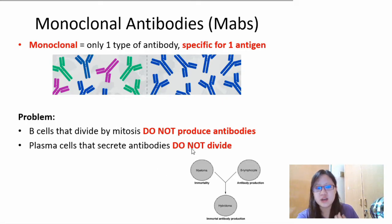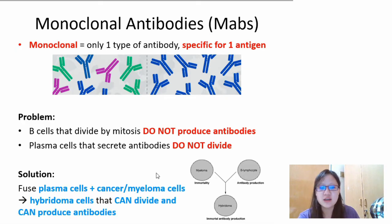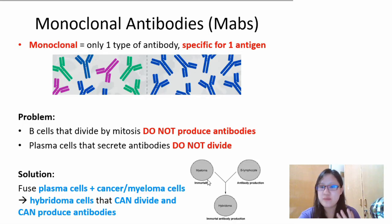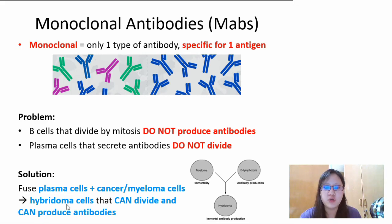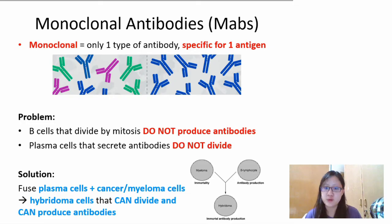Here's an interesting solution. Take plasma cells, which secrete antibodies, and you take myeloma cells or cancer cells, which can replicate limitlessly, and you fuse them together. When you fuse them, you get something called hybridoma cells. The hybridoma cells will be able to do two things: divide and produce antibodies. That is a combination we cannot naturally find, but we can create synthetically in the lab.